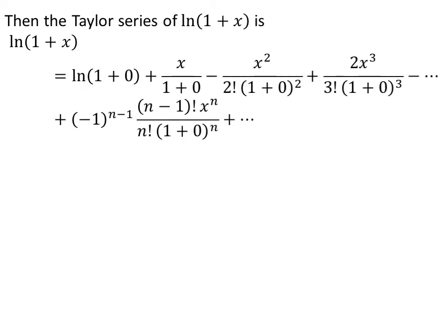Applying the above facts, the Taylor series of natural log of 1 plus x is equal to natural log of 1 plus 0, plus x upon (1 plus 0), minus x squared upon factorial of 2 times (1 plus 0) squared, plus 2 times x cubed upon factorial of 3 times (1 plus 0) cubed, minus so on up to infinity.